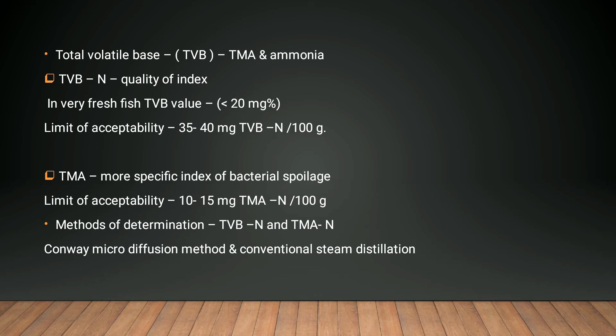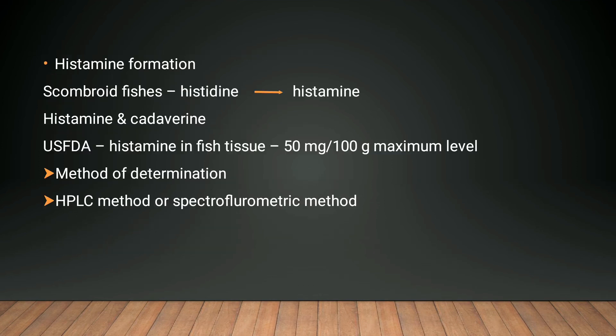Similarly, TMA is also a kind of quality index method, in which the limit of acceptability is 10 to 15 mg TMA nitrogen per 100 gram. The method of determination can be the micro-diffusion method or conventional steam distillation. By these two methods we can detect the TMA value in a given fish.